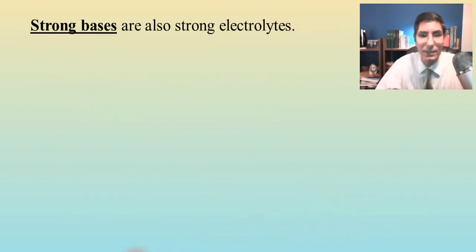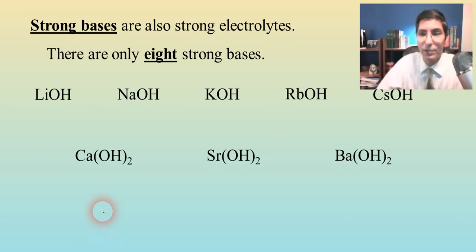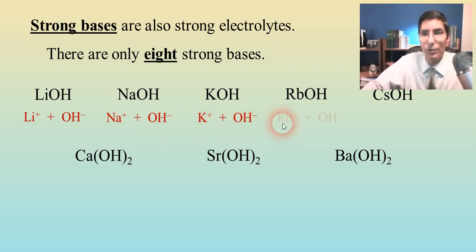Now, if we talk about strong bases, those are also strong electrolytes. There aren't that many strong bases. There are really only eight. These are the eight strong bases. And as you can see here, these are essentially the group one and two hydroxides, or at least the ones that are soluble. There are a couple of group two hydroxides that just aren't that soluble. But these are the eight strong bases that you need to know. And just like the strong acids, they're going to dissociate when they're in solution.